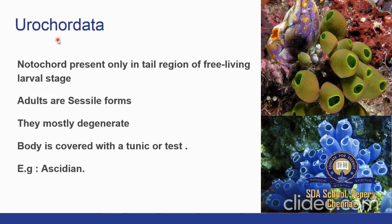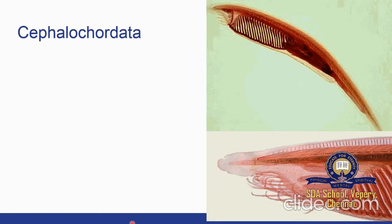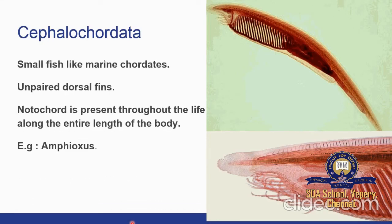In Subphylum Urochordata, the notochord is present only in the tail region of the free-living larval stage; adults are sessile forms and mostly degenerate. The body is covered with a tunic or test. Example: Ascidia. In Subphylum Cephalochordata, these are small fish-like marine chordates with unpaired dorsal fins and the notochord extends throughout the entire length of the body. Example: Amphioxus.